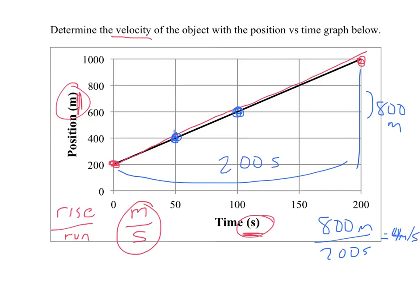Over this segment, it goes up a total of 200 meters and goes across a total of 50 seconds. So if I do that, I get 200 meters over 50 seconds, which is also 4 meters per second.